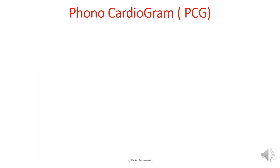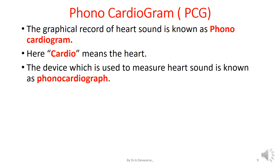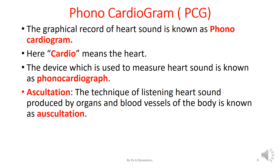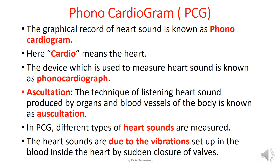Now we discuss about the phonocardiogram, that is PCG. The graphical record of the heart sound is known as phonocardiogram. The word cardio means heart. The device which is used to measure heart sound is also known as phonocardiogram. Auscultation — the technique of listening to heart sounds produced by the organs and blood vessels of the body — is known as auscultation. In PCG, different types of heart sounds are measured. The heart sounds are due to the vibrations set up in the blood inside the heart by sudden closure of valves.